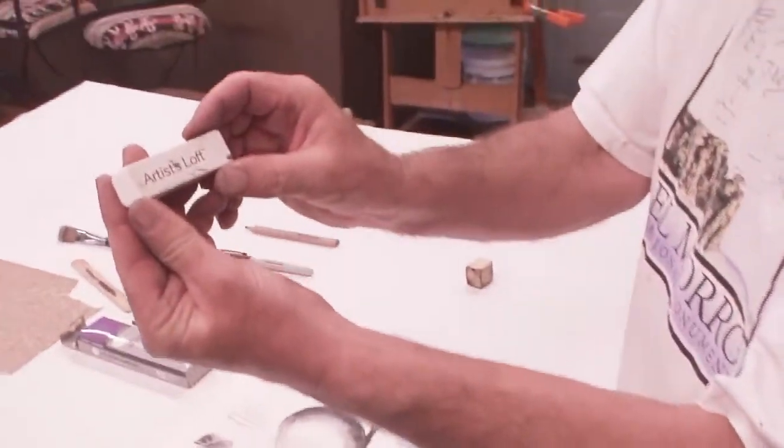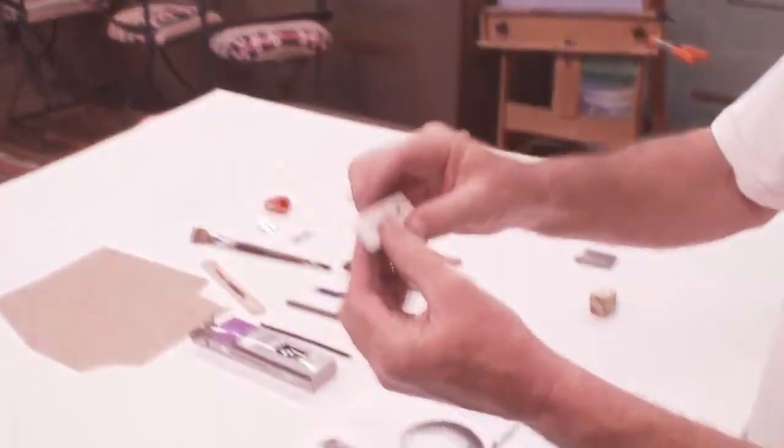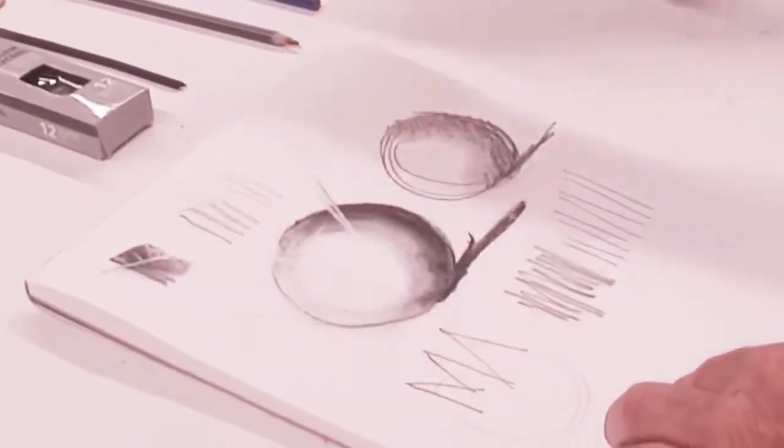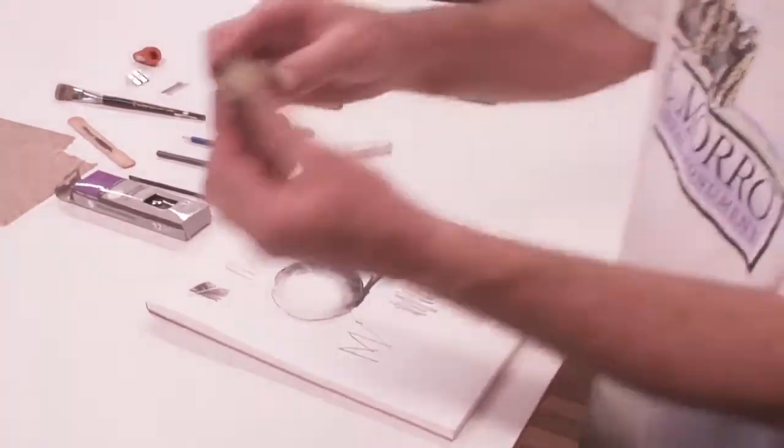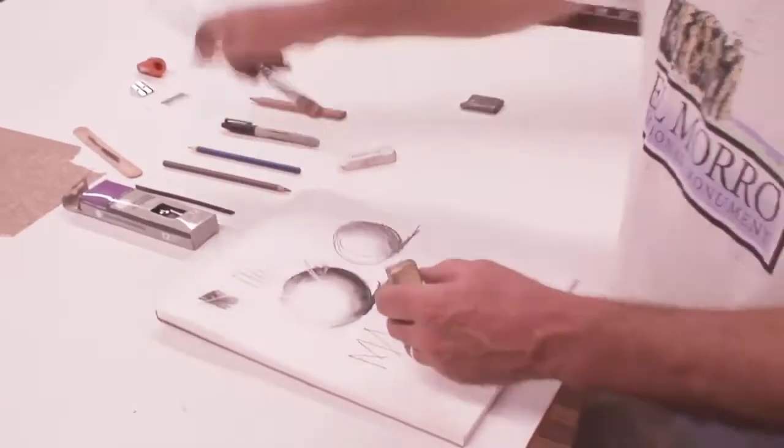Okay here's my erasers. This is a plastic eraser made mostly of plastic and rubber and you can cut really fine sharp lines. This is my rubber eraser. It's for erasing larger areas.